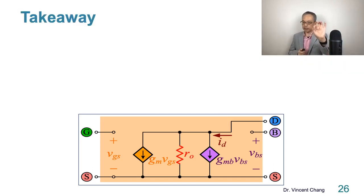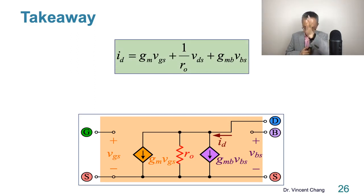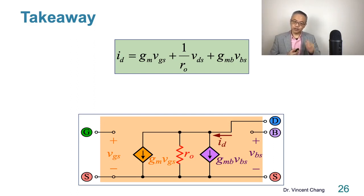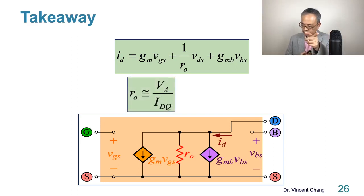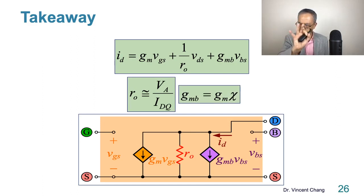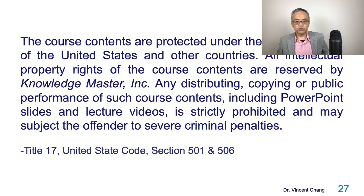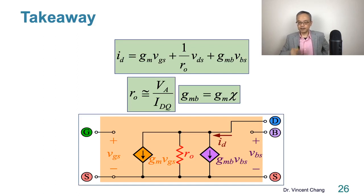Here's the takeaway: remember this model — transconductance, output resistance, body transconductance — picture it in your mind. The formulations are: RO equals Early voltage VA divided by the DC bias current, and body transconductance GMB equals the front gate transconductance Gm times the factor chi, which reflects the degree of the body effect, with a typical value of around 0.1 to 0.3. This is the end of the lecture. Thanks for watching.